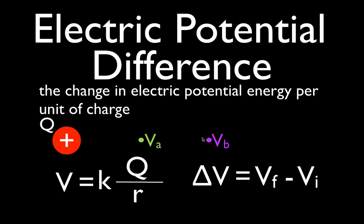When we talk about electric potential difference, what we really mean is the change in potential, and the change in potential is calculated using this equation: delta V. Delta — this triangle means the change — V is for potential, so it's the change in potential. We have to be very careful because the change in potential is the final potential minus the initial potential. We're going to be moving from A to B or from B to A, and we always have to do final minus initial. We have to keep our signs straight, and sometimes we can have negative and sometimes positive changes in potential.